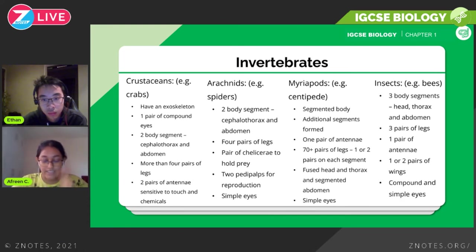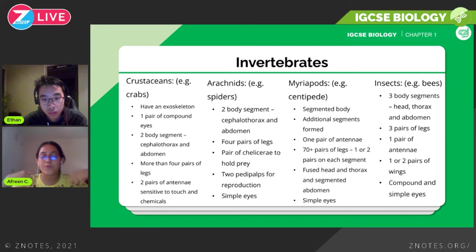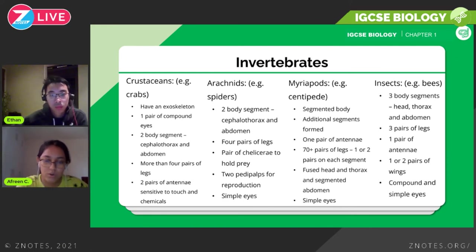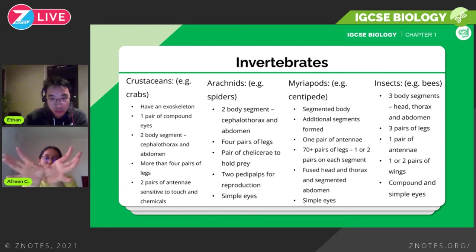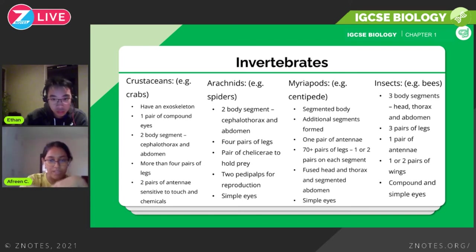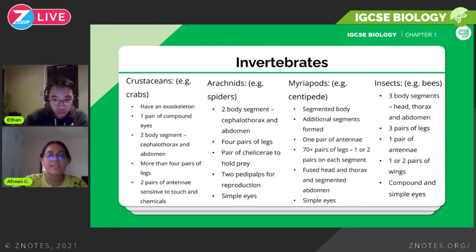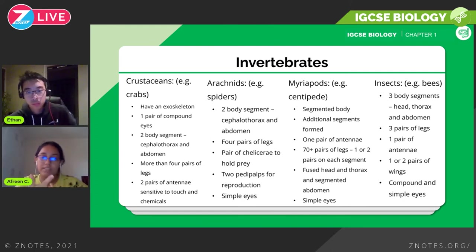Arachnids, like spiders, also have two body segments: the cephalothorax and the abdomen. They have four pairs of legs — eight legs in total. They have simple eyes. They also have chelicerae for holding prey and pedipalps for reproduction, though the main points to know for IGCSE are the two body segments, four pairs of legs, and simple eyes. The word 'cephalothorax' is often a keyword in the marking scheme that can earn extra marks.